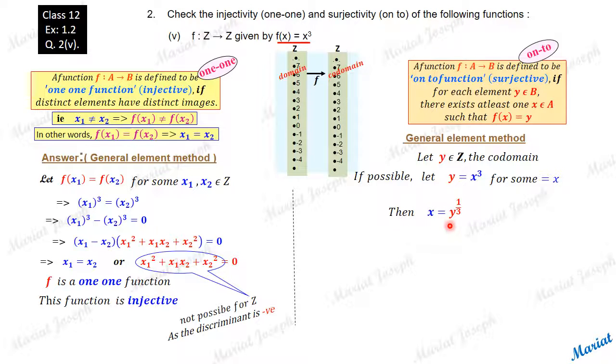but it is to be checked whether this x will really belong to the domain. That means, will this x be an integer? It may not be always possible. For example, had we taken the y as number 3. If the y was number 3, x would be 3 to the power 1/3. 3 to the power 1/3 is not an integer.